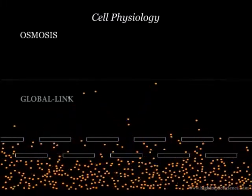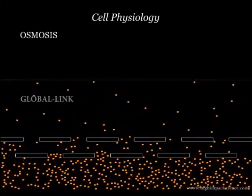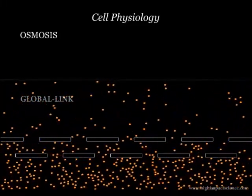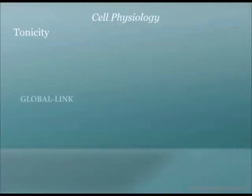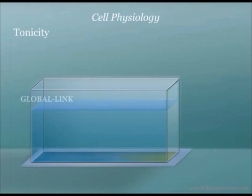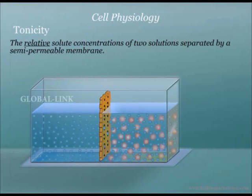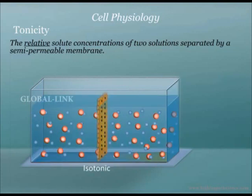The next physiological process is osmosis. Osmosis is a special type of diffusion that involves a semi-permeable membrane. To understand osmosis, let us first understand a term called tonicity. Tonicity refers to the relative solute concentration of two solutions separated by a semi-permeable membrane. The solution with lower solute concentration is said to be hypotonic, and the one with the higher solute concentration is said to be hypertonic. If the two solutions have equal solute concentration, they are said to be isotonic.